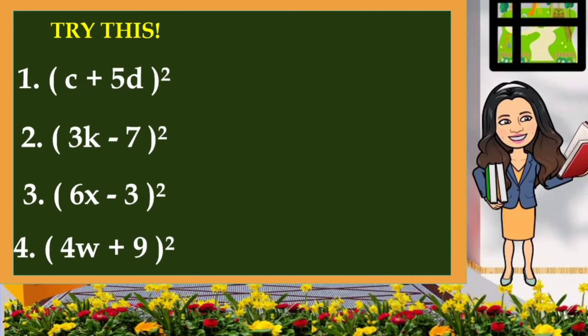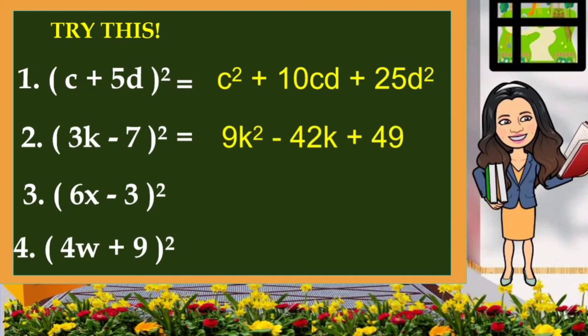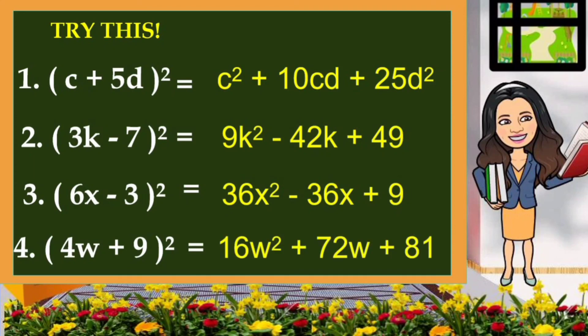Now try squaring the given binomials. Number 1: the square of the quantity C plus 5D — that is C squared plus 10CD plus 25D squared. Number 2: the square of the quantity 3K minus 7 — that is 9K squared minus 42K plus 49. Number 3: the square of the quantity 6X minus 3 — that is 36X squared minus 36X plus 9. And number 4: the square of the quantity 4W plus 9 — that is 16W squared plus 72W plus 81.